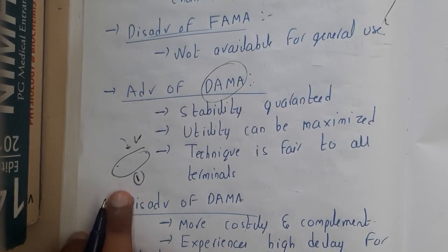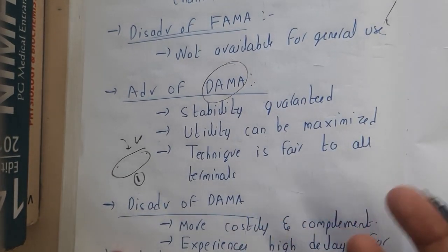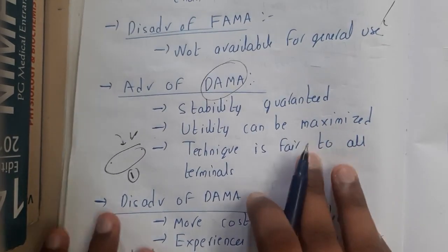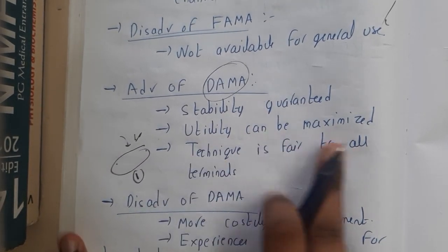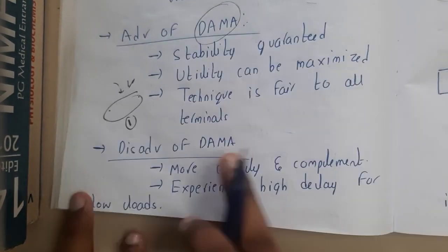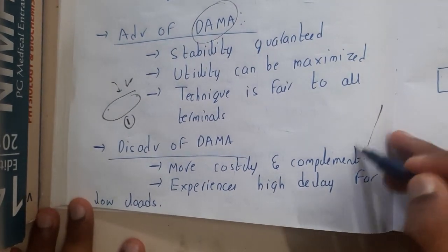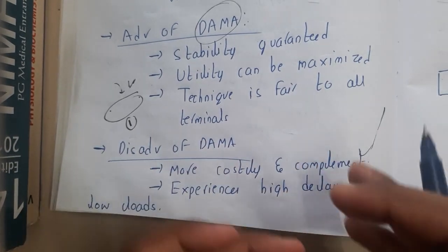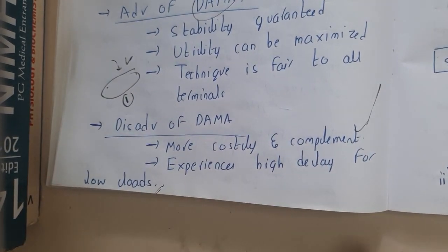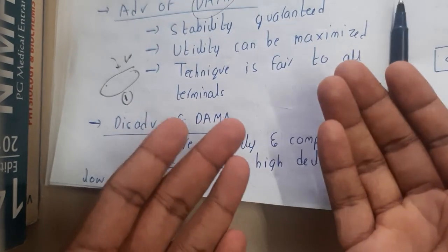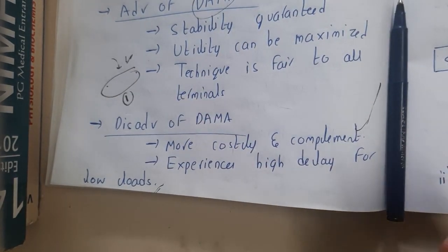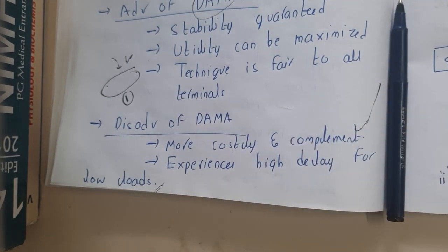When it comes to TV like dish TV, someone will be using it 24/7, such as in shopping malls, so in those situations FAMA is more useful. In DAMA, utilization can be maximized and the technique is fair to all terminals. The disadvantages of DAMA are that it is a bit costly and complex since a management algorithm is needed. It also experiences high delay for low loads — for example, frequent reconnections introduce delay.